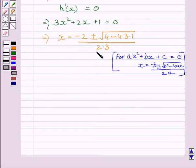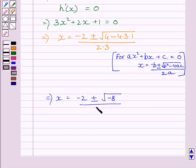Now simplifying this expression, we get x equals minus 2 plus minus square root of minus 8 upon 6.